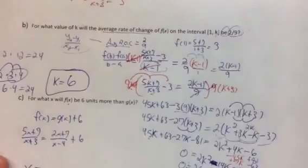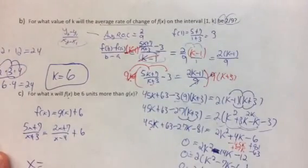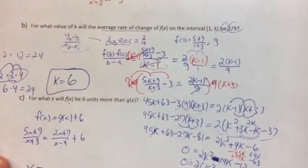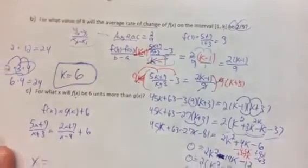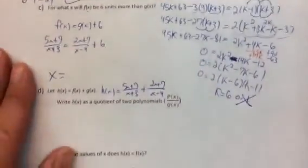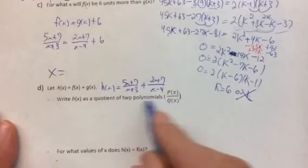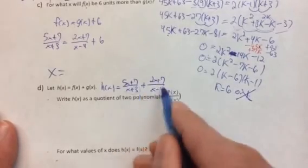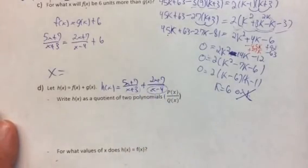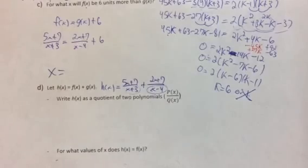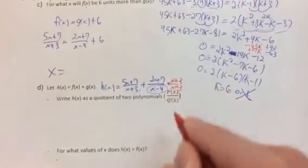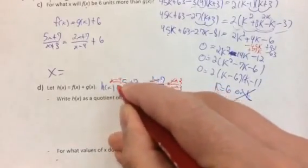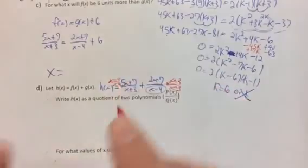Let h of x equal f of x plus g of x. We need to combine these into a single quotient, which means getting a common denominator. Multiply the first fraction by x plus 3 and the second by x minus 4 to get matching denominators. I'm sure it will come out well. Good luck on the rest of your homework!